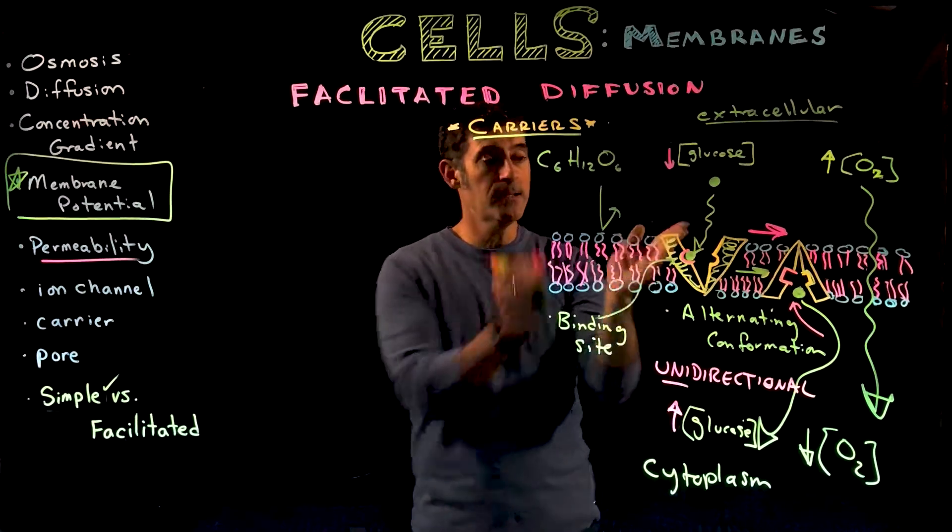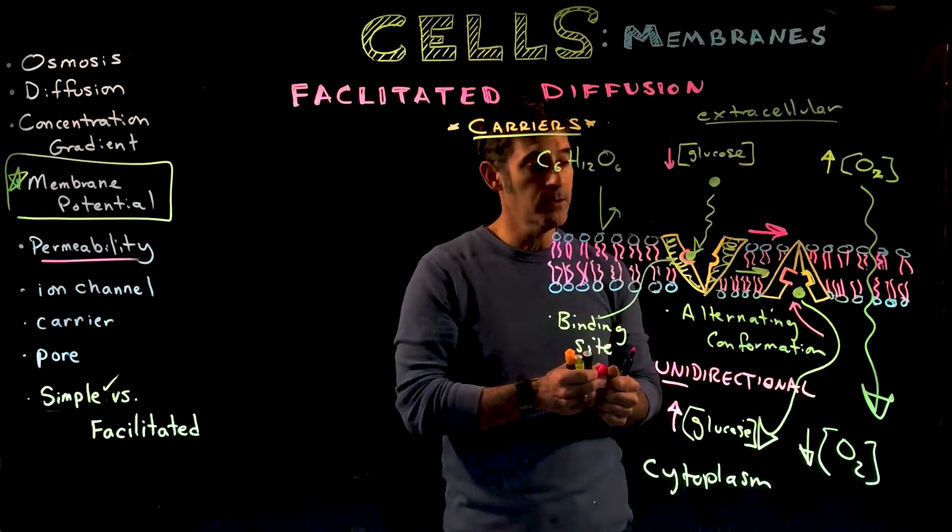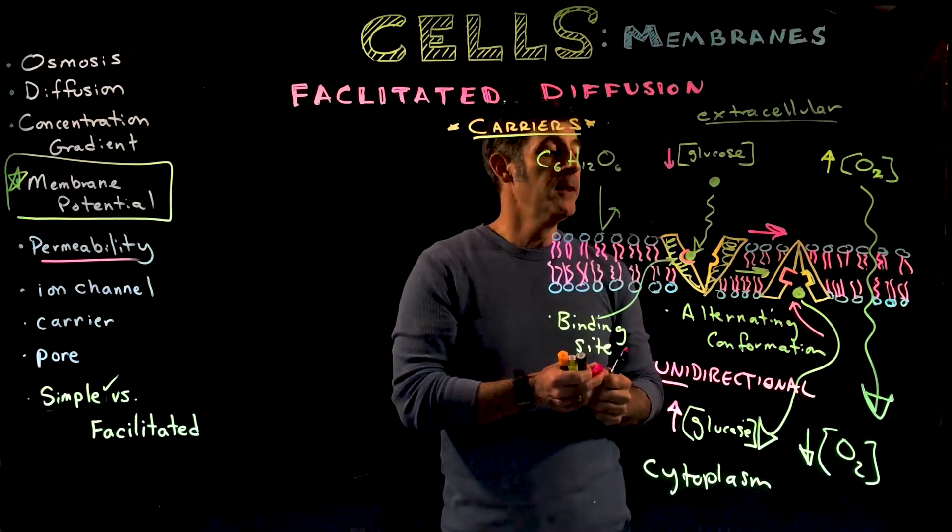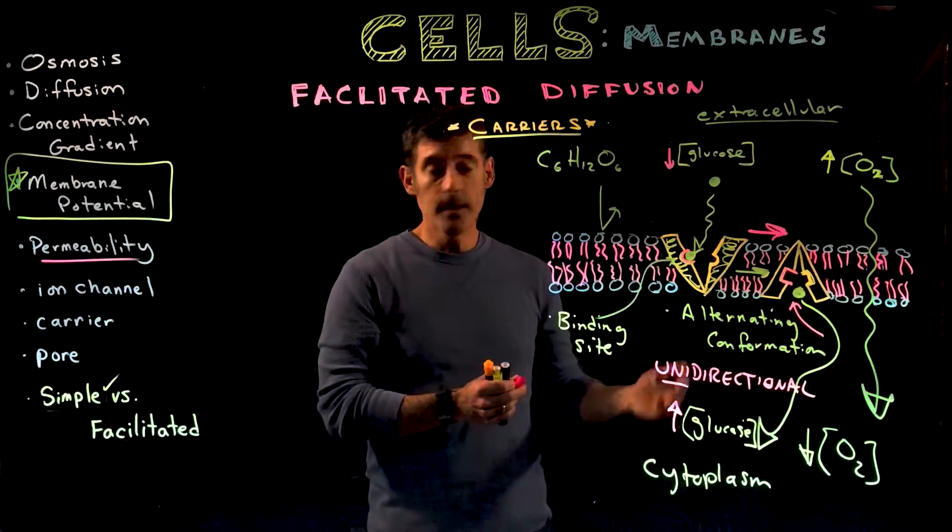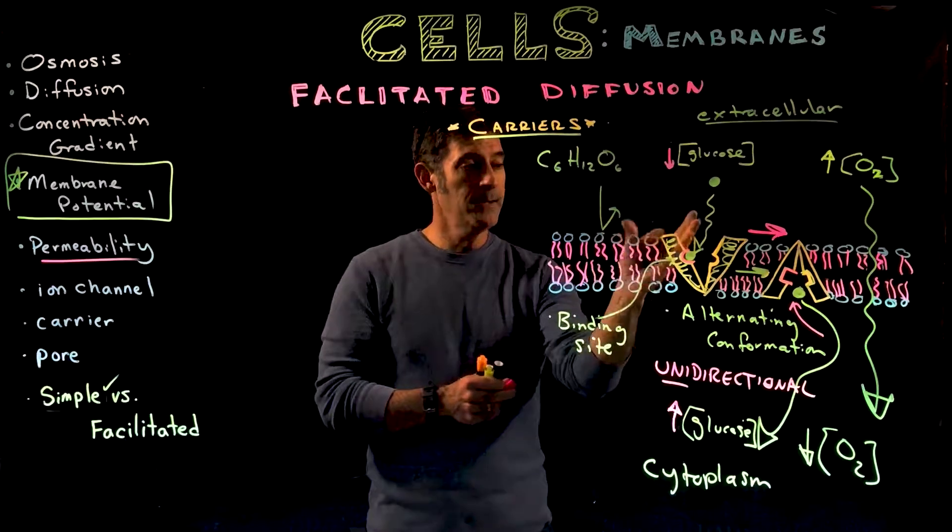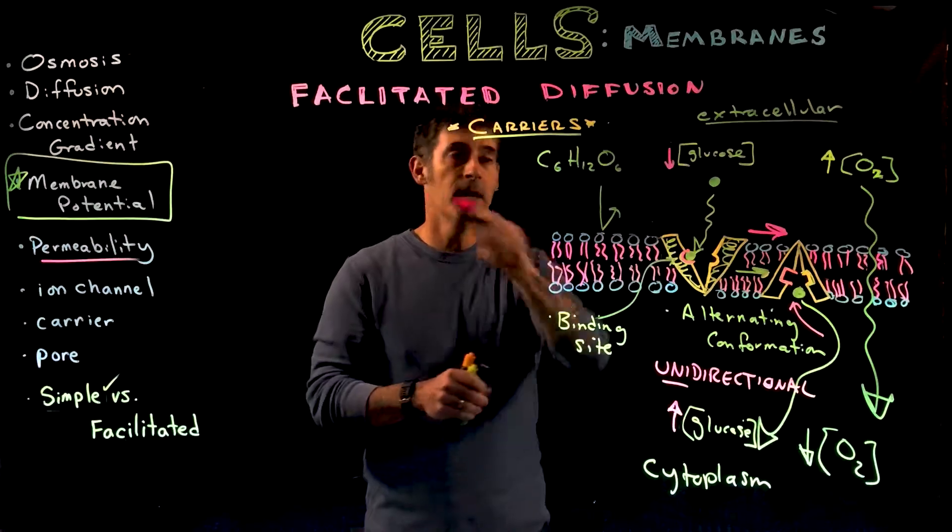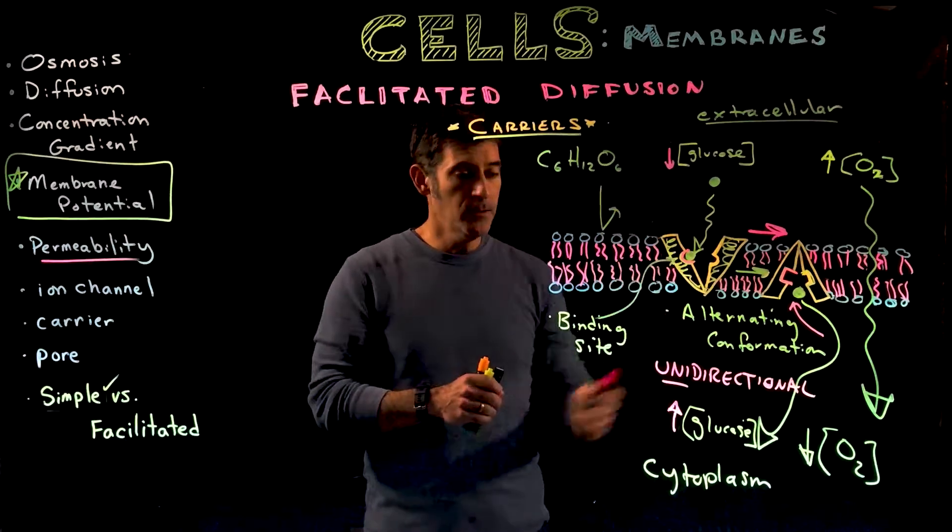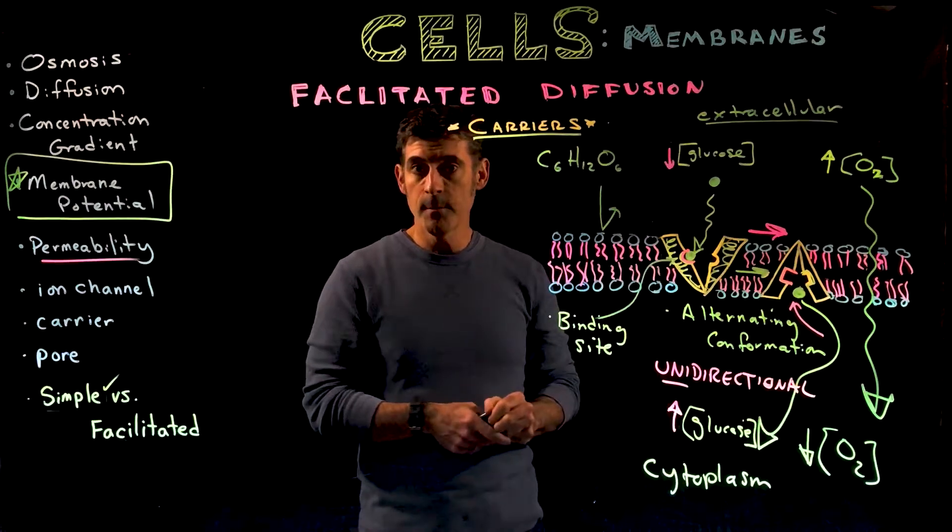Pumps have many of the same properties as carriers. They have specific binding sites and change shape as they work to push molecules across the membrane. But they have to gain energy from something to do that type of work. They bind and then change shape, altering their conformation. So we have facilitated diffusion with a carrier that is unidirectional, the next step in looking at transport across the membrane.